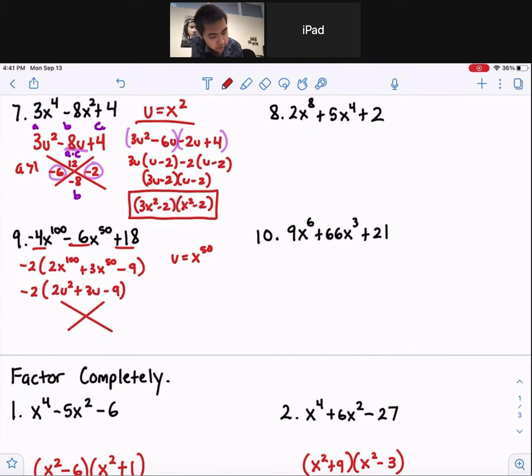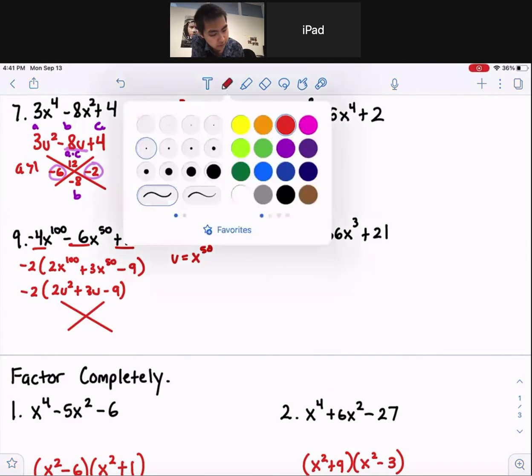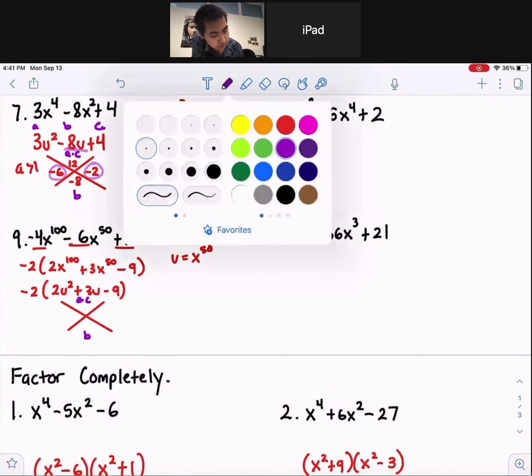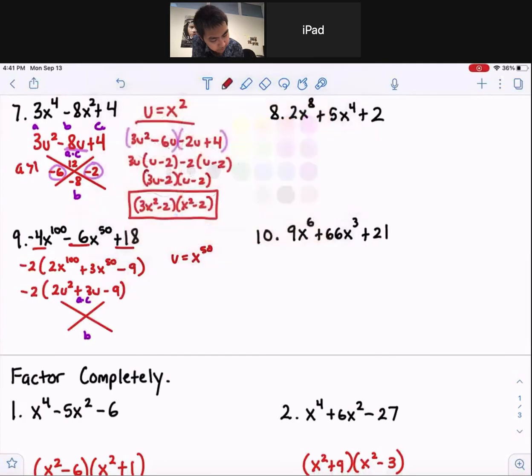And we can factor this by grouping. Oh, sorry. Factor this by x method. So remember, a times c is up top. B is on the bottom.